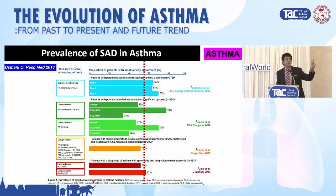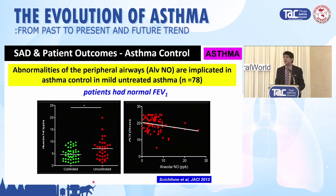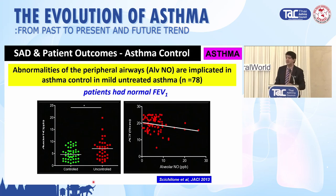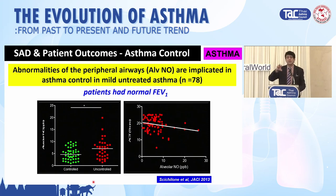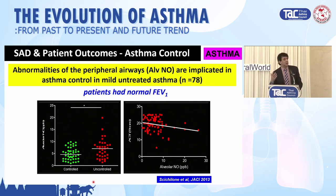That means every second patient you see in clinic will have small airways disease — so you need to think about whether we should treat small airways disease in mild asthma. Does small airways disease in asthma correlate with patient symptoms? Yes. This was one of the first studies looking at alveolar nitric oxide as a measure of small airways inflammation. Patients who had greater small airways inflammation on the y-axis had more uncontrolled asthma.